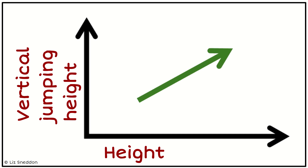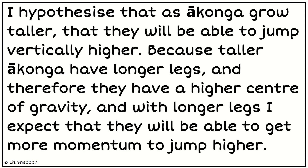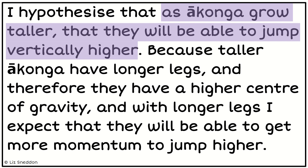I think, I suspect, there's going to be some kind of increasing relationship — that as people get taller, the height that they can jump will also get taller. So I've said: I hypothesise that as our konga grow taller, they will be able to jump vertically higher. I'm being specific, using both variables, and saying as my explanatory variable increases, my response variable will also increase.